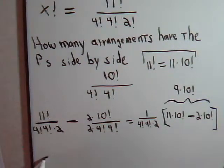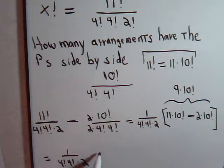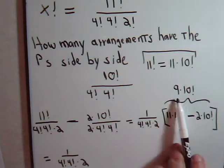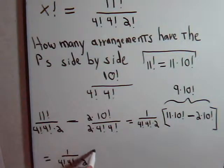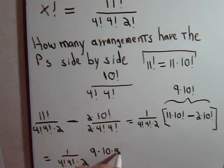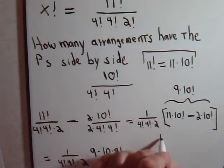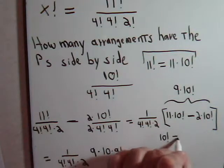So let's see what we have. This would be equal to, we have this times 9. Now here we have 9 times 10 factorial. We have 9 times 10 factorial, we can write that as 10 times 9 factorial.